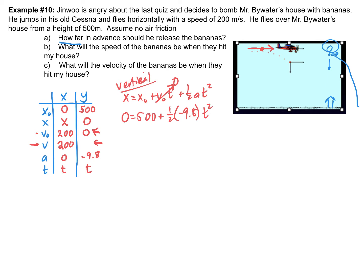We notice our initial position is 500 and our final is zero. So we plug in: 0 = 500 + 0·t + ½(−9.8)t². The v₀t term goes away because the initial vertical velocity is zero. We punch that into our calculator and we get t = 10.1 seconds. Now if we're looking at sig figs, I only have one significant figure, so I'd round to 10 — but this isn't actually my final answer. The question is how far in advance, so now I know the time it takes to fall from 500 meters down to the ground where it hits my house.